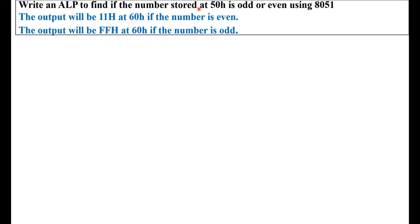The given number is stored at memory location 50H. We need to determine if this given number is odd or even. The output will be 11H at memory location 60H if the number is even, and if the given number is odd, we need to store FFH at 60H, because the 8051 assembler cannot display messages. So we are using just a representation for even and odd numbers.